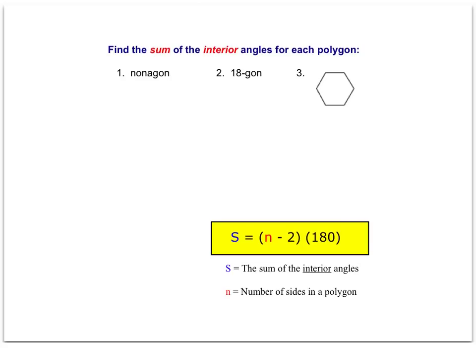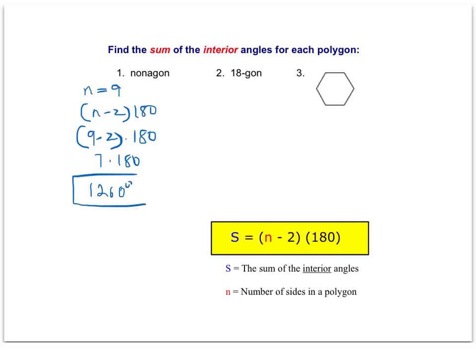For a nonagon, we know that is a 9-sided polygon. So if n equals 9, we're going to plug that into our formula — you will want a calculator for these. We subtract 2 from the number of sides and multiply times 180. We get 7 times 180, which is 1260 degrees. So a 9-sided figure, the sum of the interior angles is 1260°.